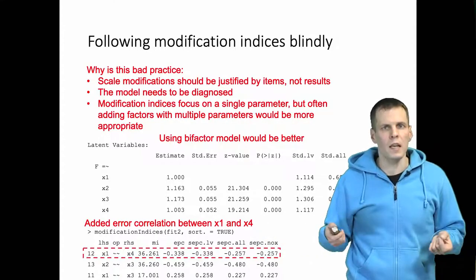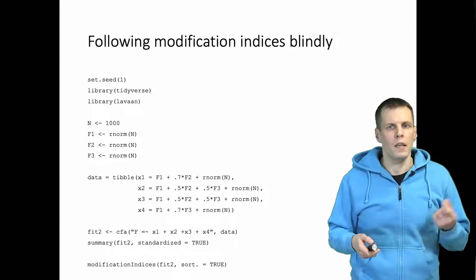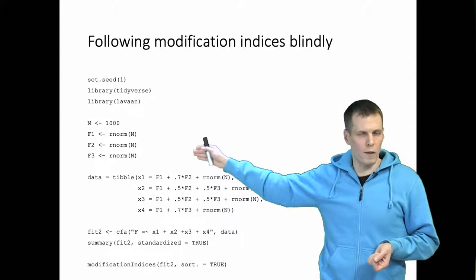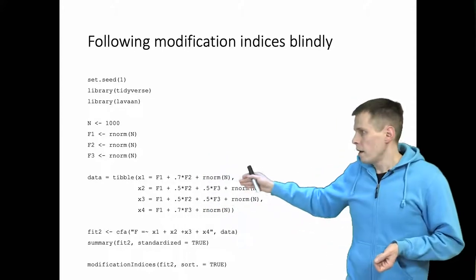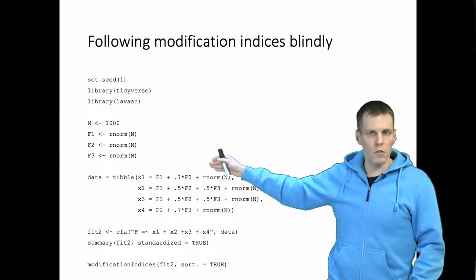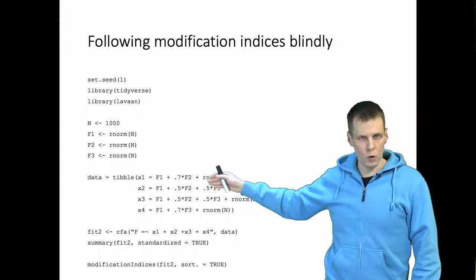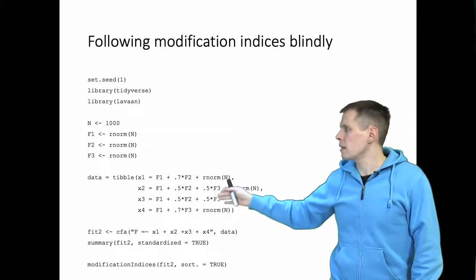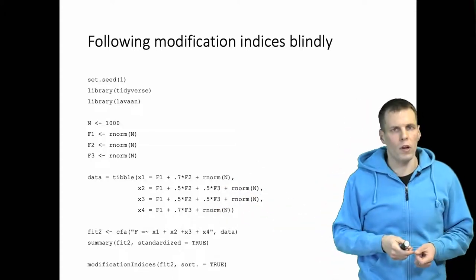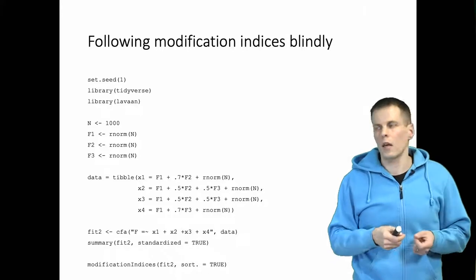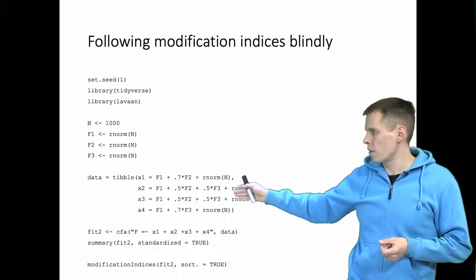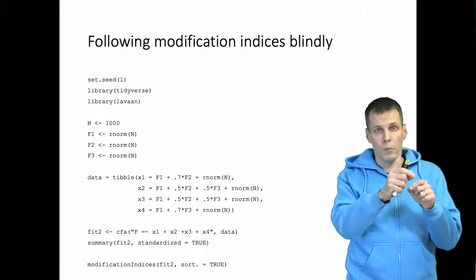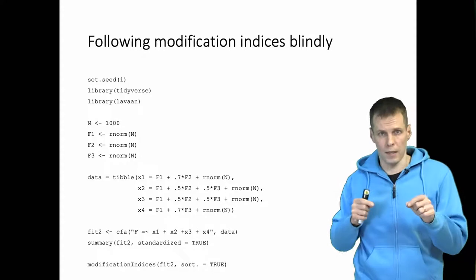So what is the data generation process like? Here we have a model with one main factor F1—all indicators load on F1 equally—and then we have F2 and F3, two minor factors. F2 affects the first three indicators, F3 affects the last three indicators. And why x1 and x4 are correlated less than the other indicators is that x2 and x3 are affected by both minor factors, but x1 and x4 are affected only by a factor that does not affect the other one.